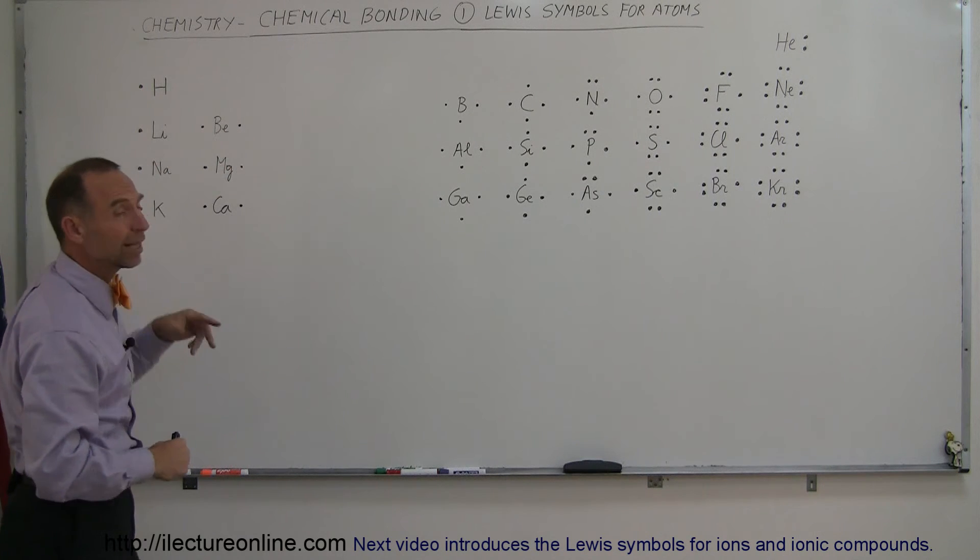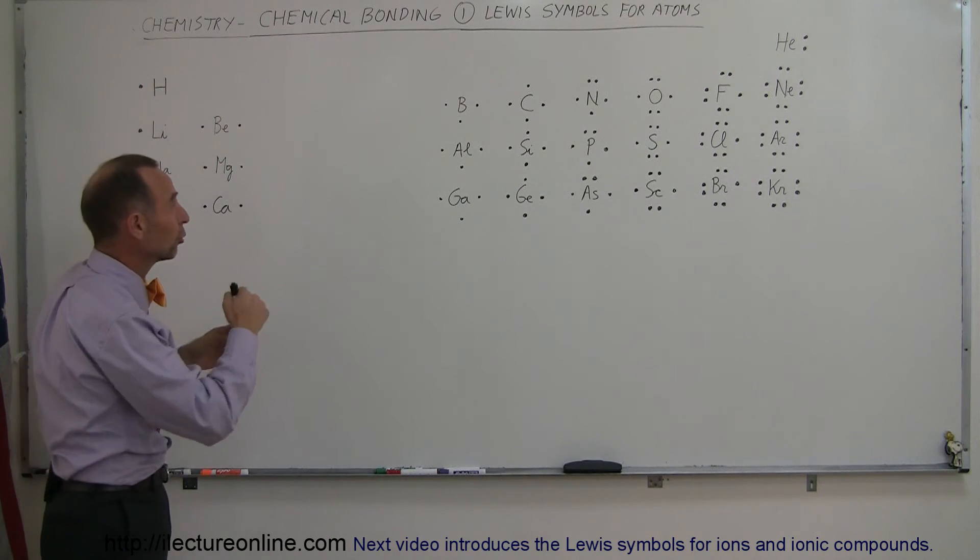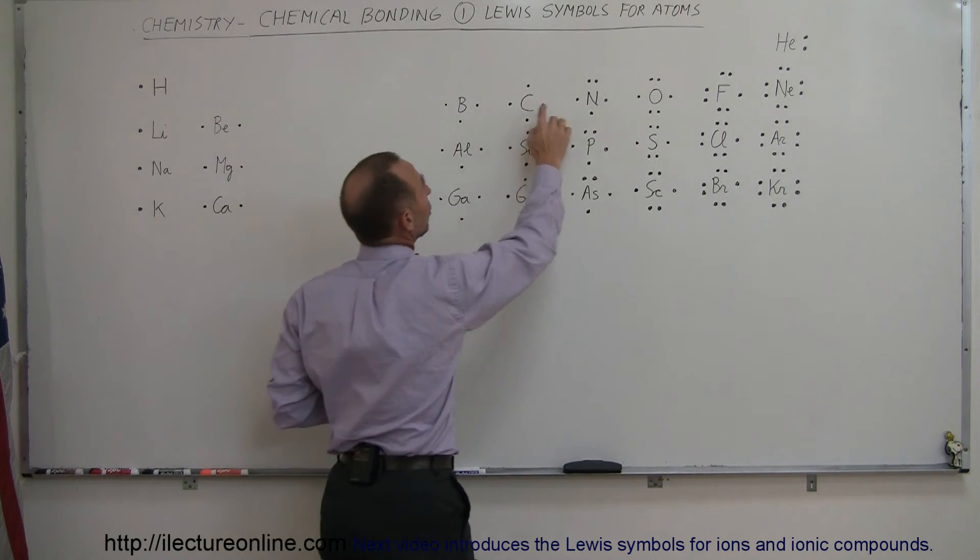Same for beryllium, it has only two electrons in the second energy level. We ignore the two in the inner. Here it's three, there it's four, there it's five.